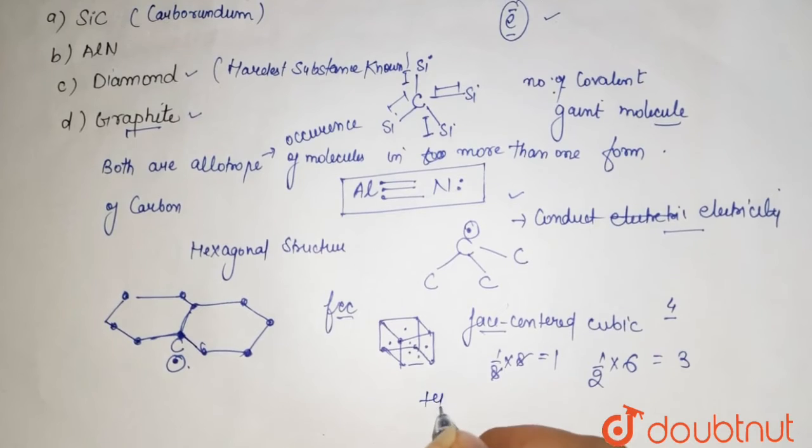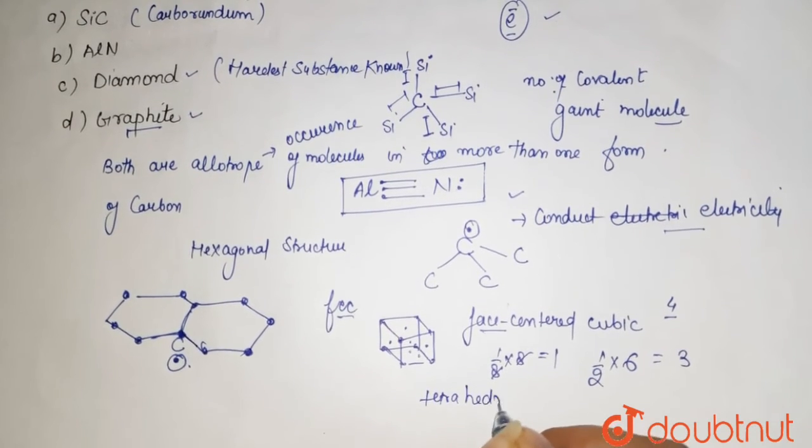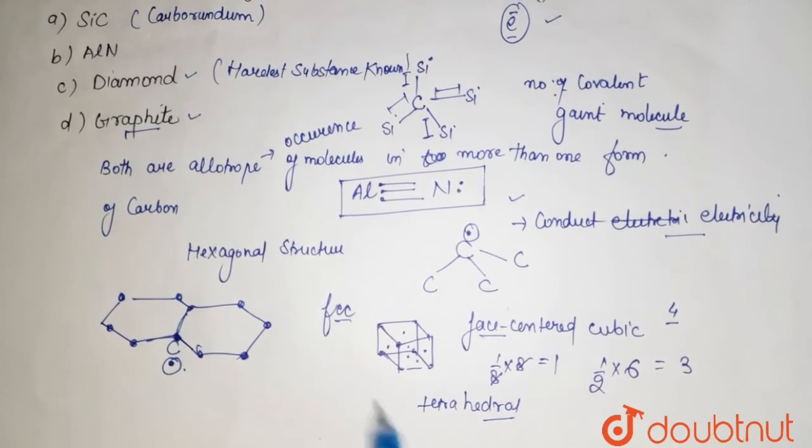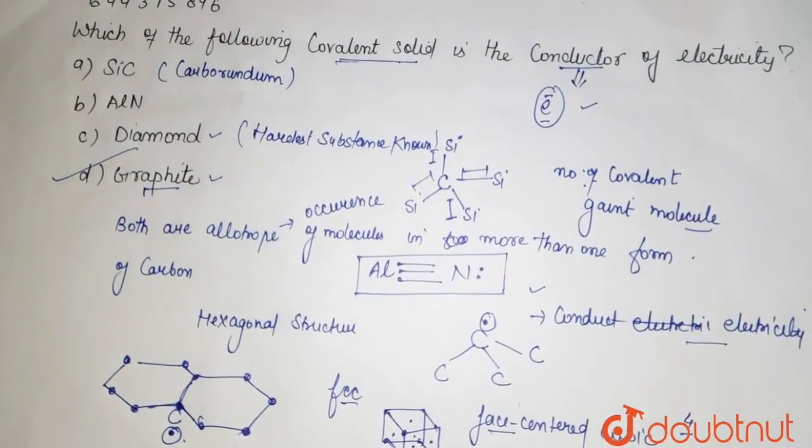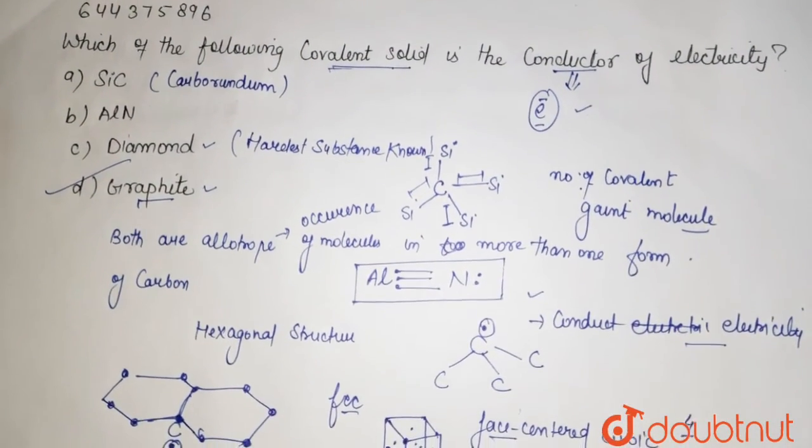And it has tetrahedral voids also. So it is a packed structure. It does not have free electrons. According to that, your answer, that is graphite, is the covalent solid and the conductor of electricity.